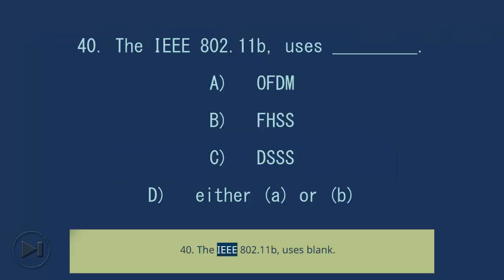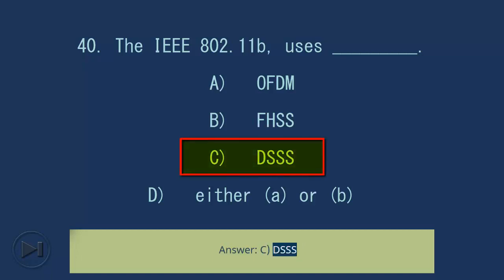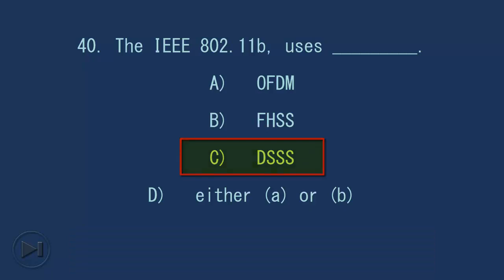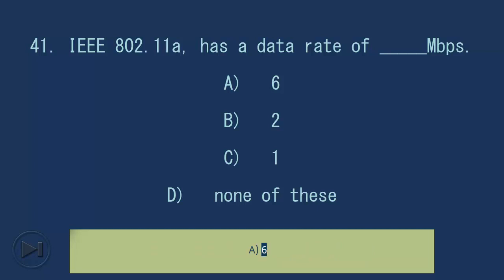Question 40: The IEEE 802.11b uses blank. A. OFDM, B. FHSS, C. DSSS, D. Either A or B. Answer: C. DSSS. Question 41: IEEE 802.11a has a data rate of blank Mbps. A. 6, B. 2, C. 1, D. None of these. Answer: A. 6.